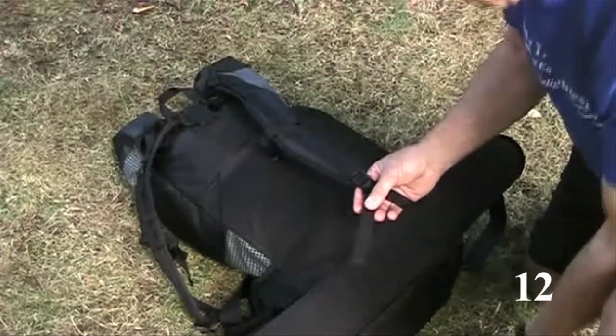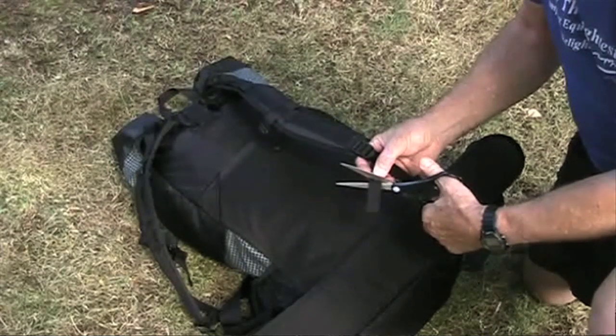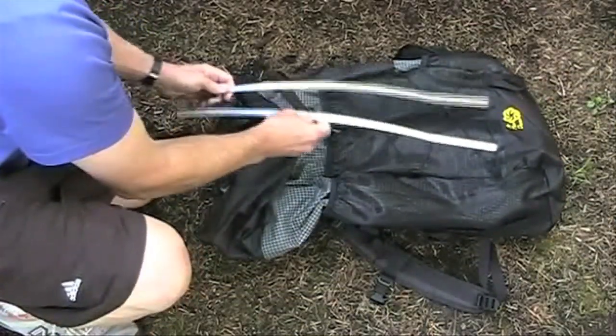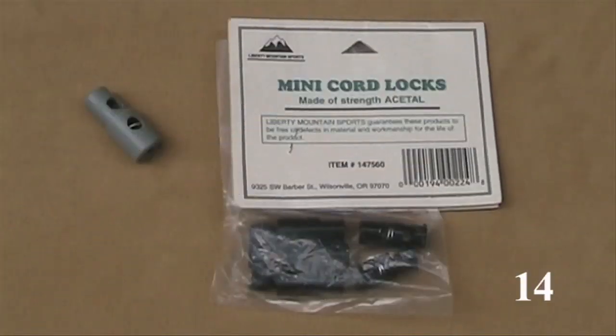Trim the waist belt and straps. Leave them long enough for your bulkiest clothing. If the pack has stays or some other reinforcing material, try the pack without it. If your pack has large buckles or cord locks, replace them with lighter ones.